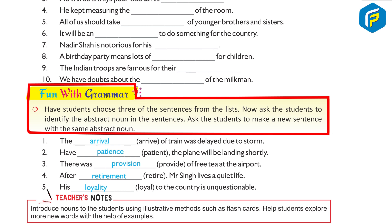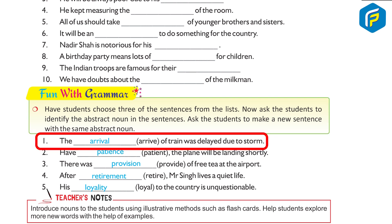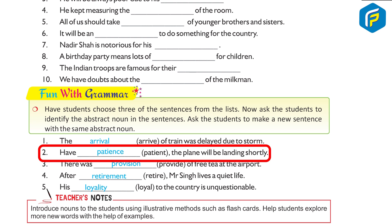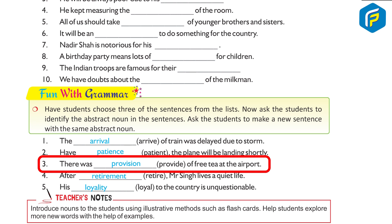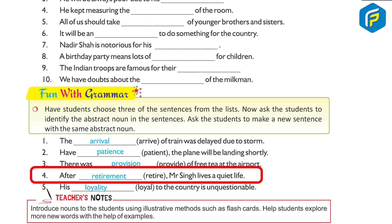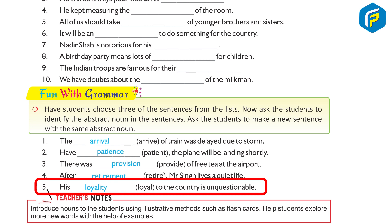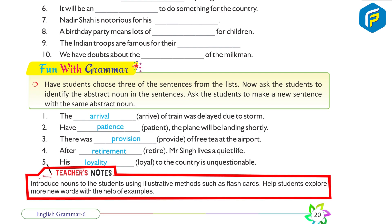Fun with grammar: have students choose three of the sentences from the list. Ask the student to identify the abstract noun in the sentences, then make a new sentence with the same abstract noun. Example sentences: 1. The arrival of the train was delayed due to a storm. 2. Have patience — the plane will be landing shortly. 3. There was provision of free tea at the airport. 4. After retirement, Mr. Singh lives a quiet life. 5. His loyalty to the country is unquestionable. Teacher's note: Introduce nouns to the student using illustrative methods such as flashcards; help students explore more new words with the help of examples.